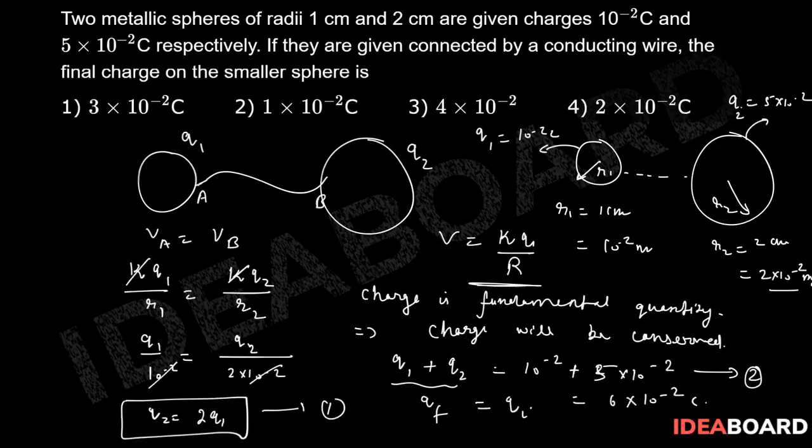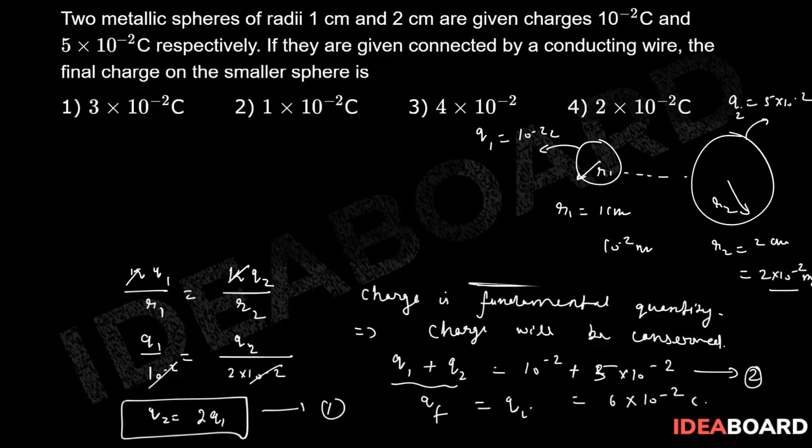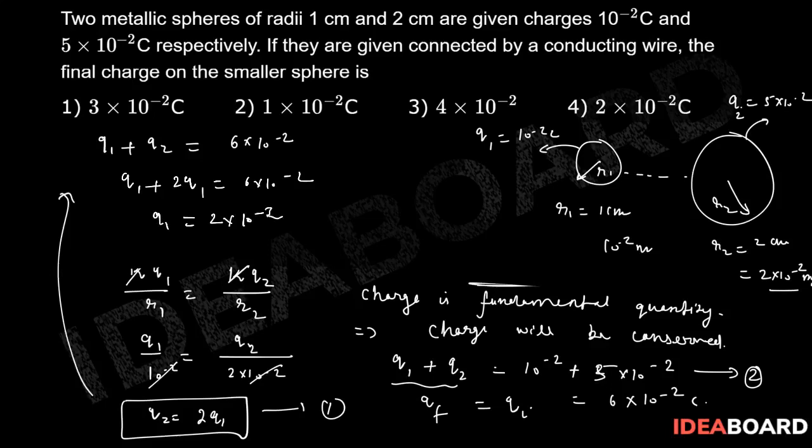Now what we need to do? We need to just simply solve them. In order to solve them, put the values. Here q1 plus q2 is equal to 6 into 10 to the power minus 2. Using this equation that q2 is equal to 2q1, q1 plus q2, replace q2 by 2q1, so that will be 6 into 10 to the power minus 2. So q1 will be 2 into 10 to the power minus 2 coulombs.